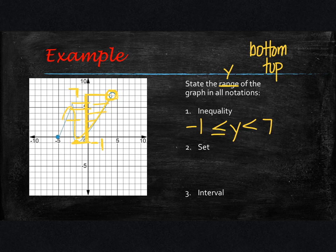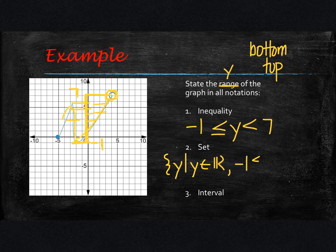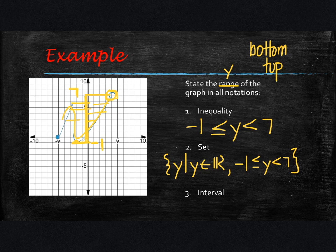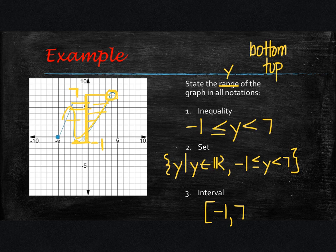Set notation is easy after we've written the inequality. We put the curly parentheses; this time we use the variable y because we're talking about range: y such that y is an element of all real numbers where y is between negative 1 and 7. For interval notation, the smallest number is negative 1 and the highest is 7. The negative 1 is a solid point, so that's a bracket; 7 is an open circle, so we use a parenthesis.